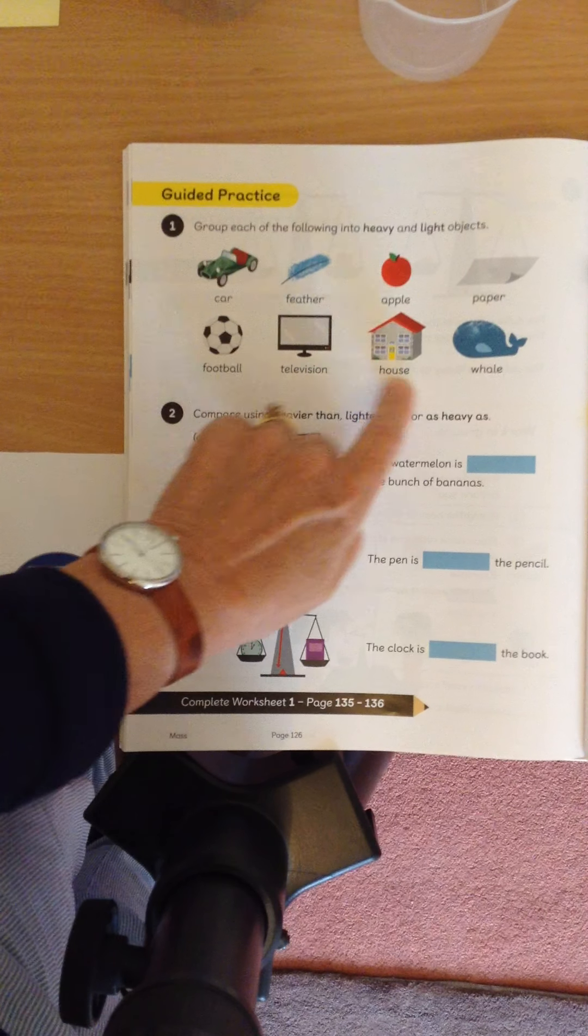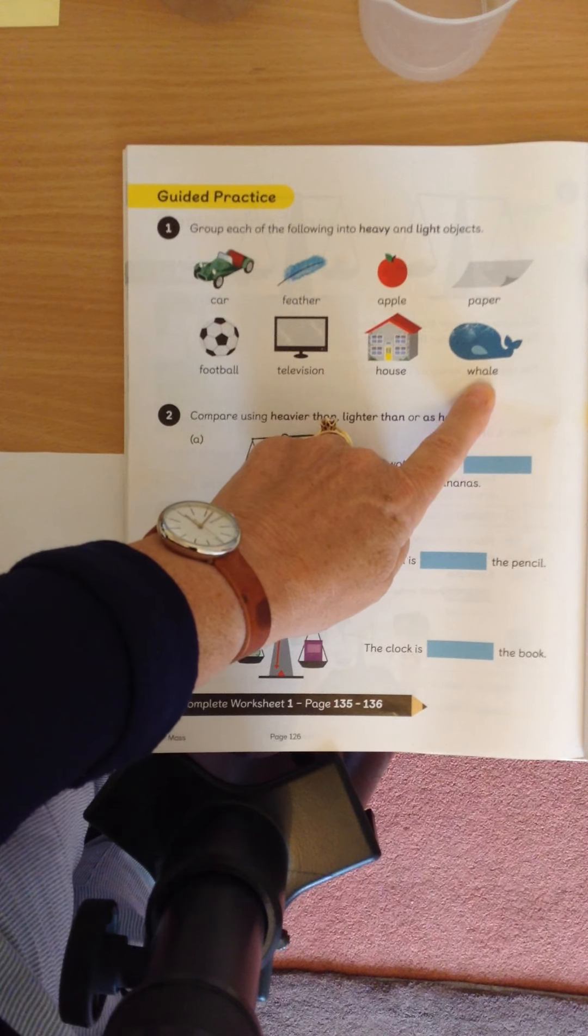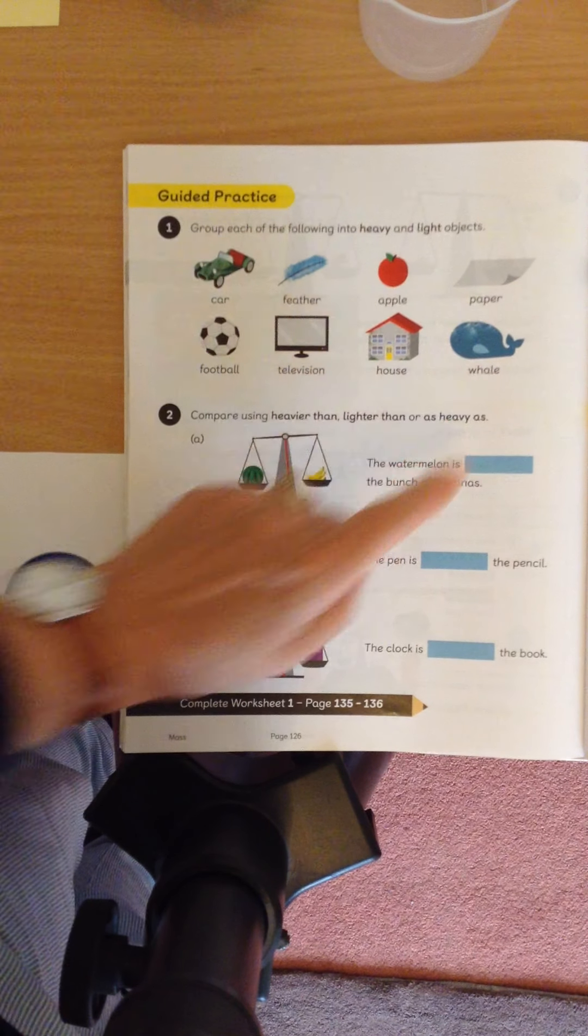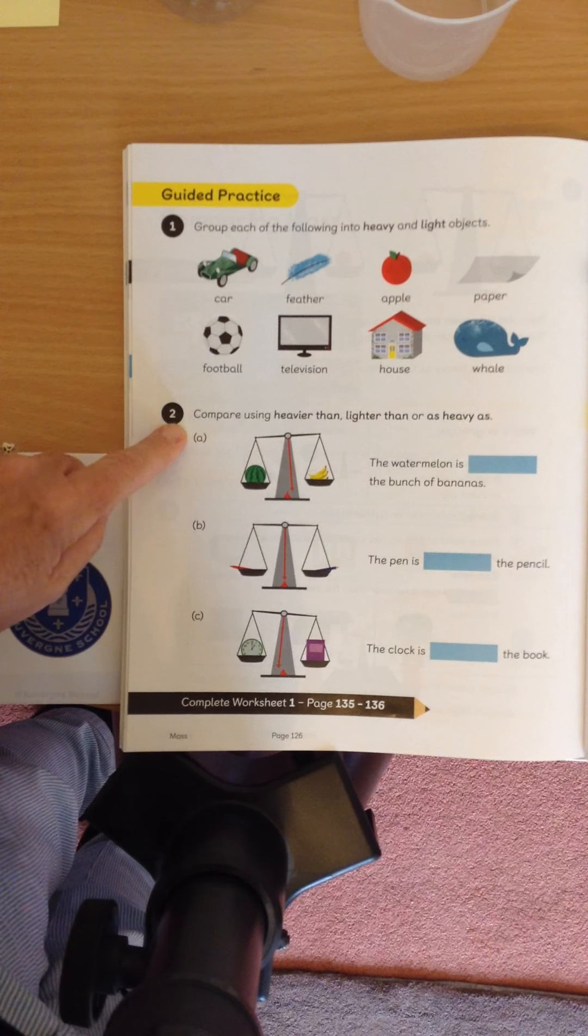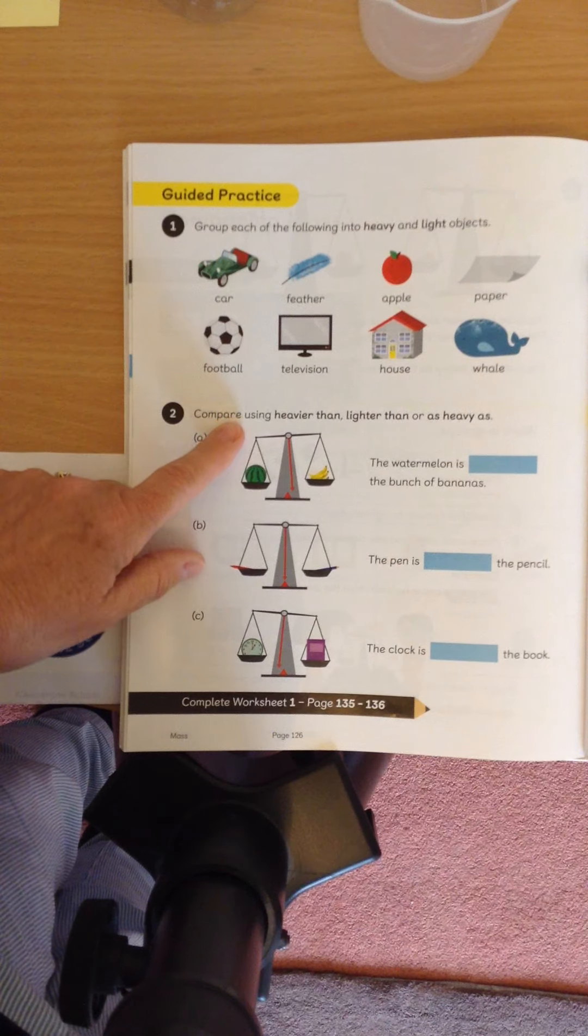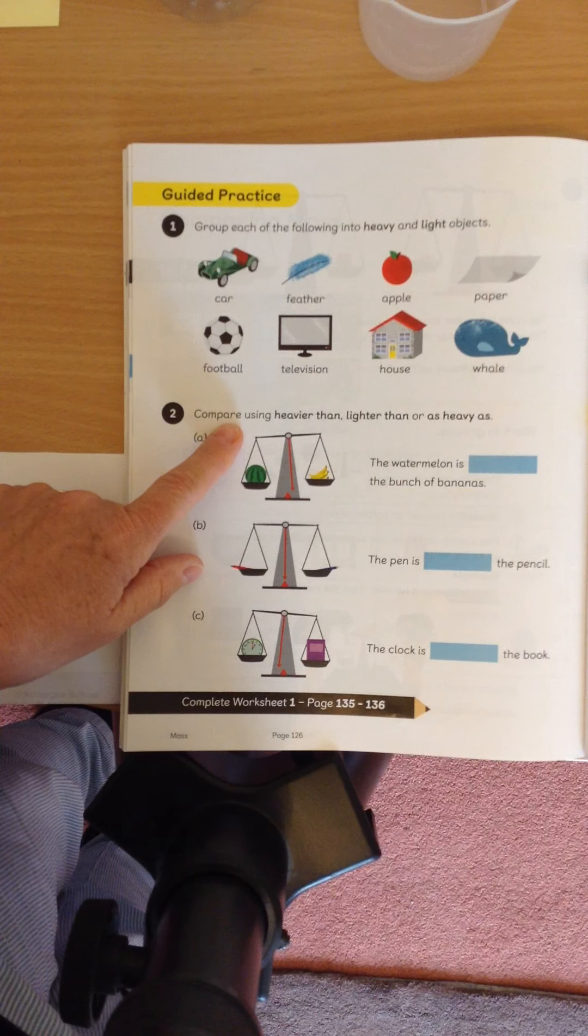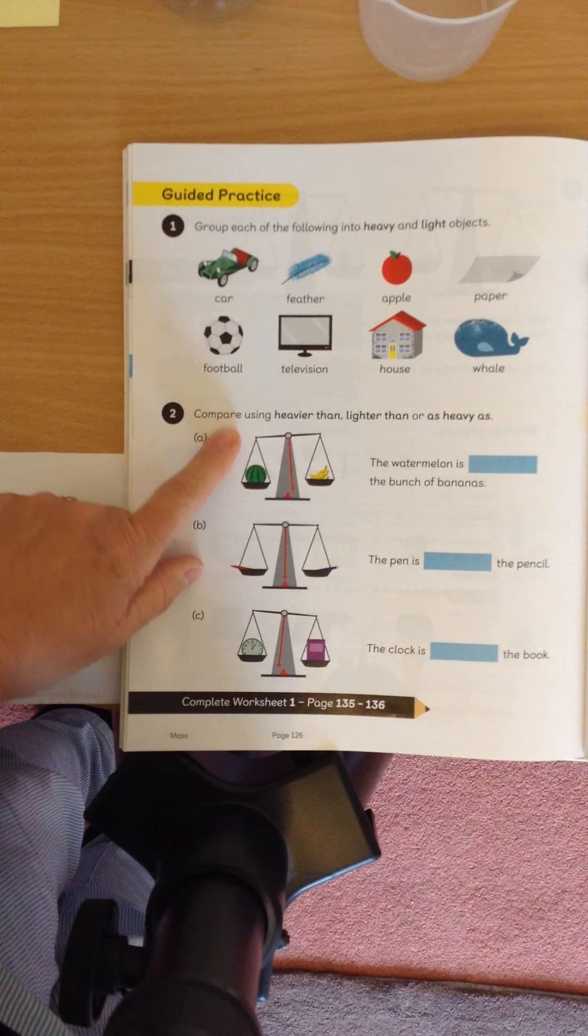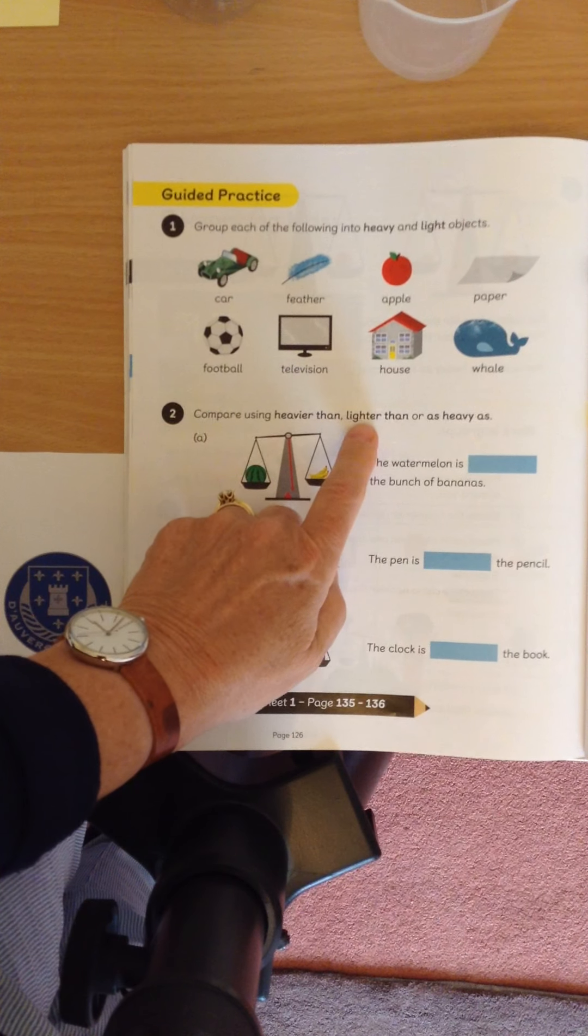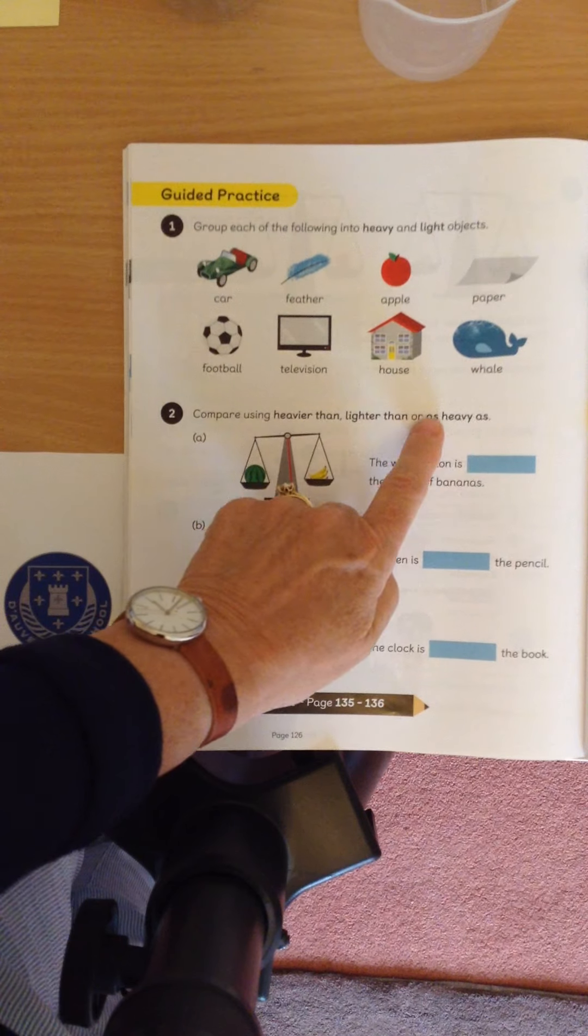And what about a whale, a very large fish? Heavy or light? That's right, it's heavy. Okay, in this number two of our guided practice, we're going to do some comparing. And we're going to compare two objects together. So it says compare using heavier than or lighter than or as heavy as. That's when they're the same.